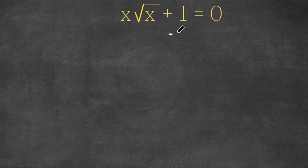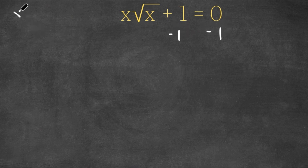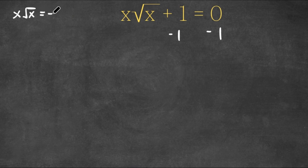Now what I'm first going to do is I'm going to subtract one on both sides to move this one to the right hand side. So now we get x times the square root of x is equal to negative one.